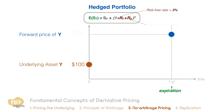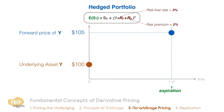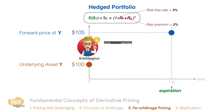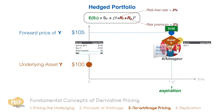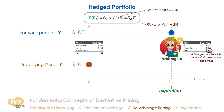Let's say the forward is priced with a 2% risk premium at $105 instead. If that's the case, an arbitrageur can sense the opportunity and borrow $100 at the risk-free rate of 3% to buy the asset. He will simultaneously enter a short position at the contract price of $105. At time zero, the net cash flow from the arbitrageur is exactly zero. At expiration, the arbitrageur simply sells the asset for $105 to fulfill the contract and uses $103 from the proceeds to repay the loan. As you can see, the arbitrageur earns $2 without putting in any cash.